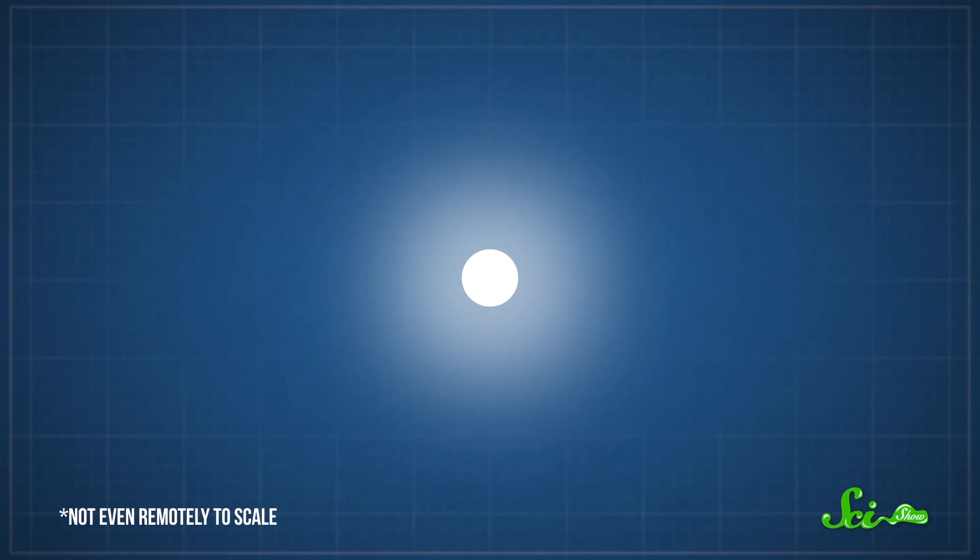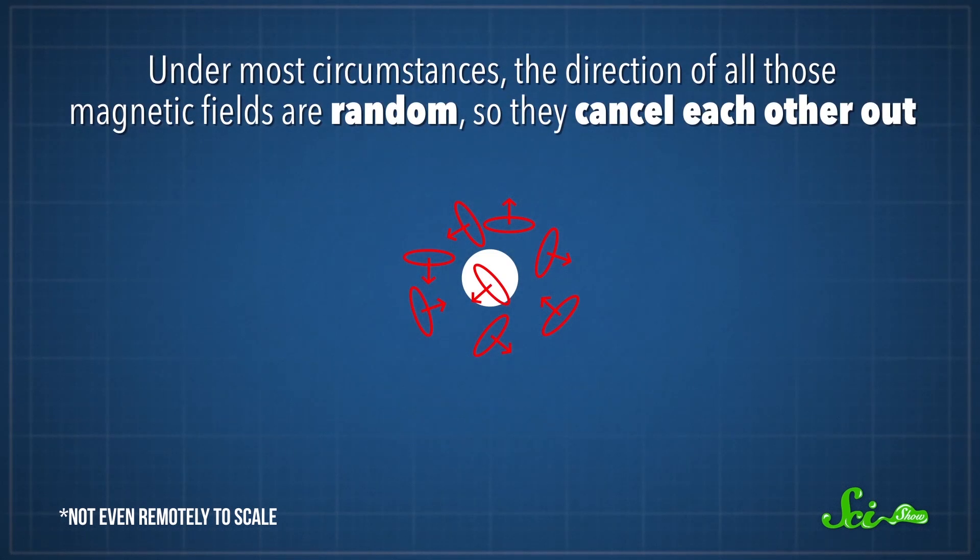And because of the relationship between electricity and magnetism, that current produces a magnetic field for each electron. Under most circumstances, the direction of all those magnetic fields are random, so they just cancel each other out.